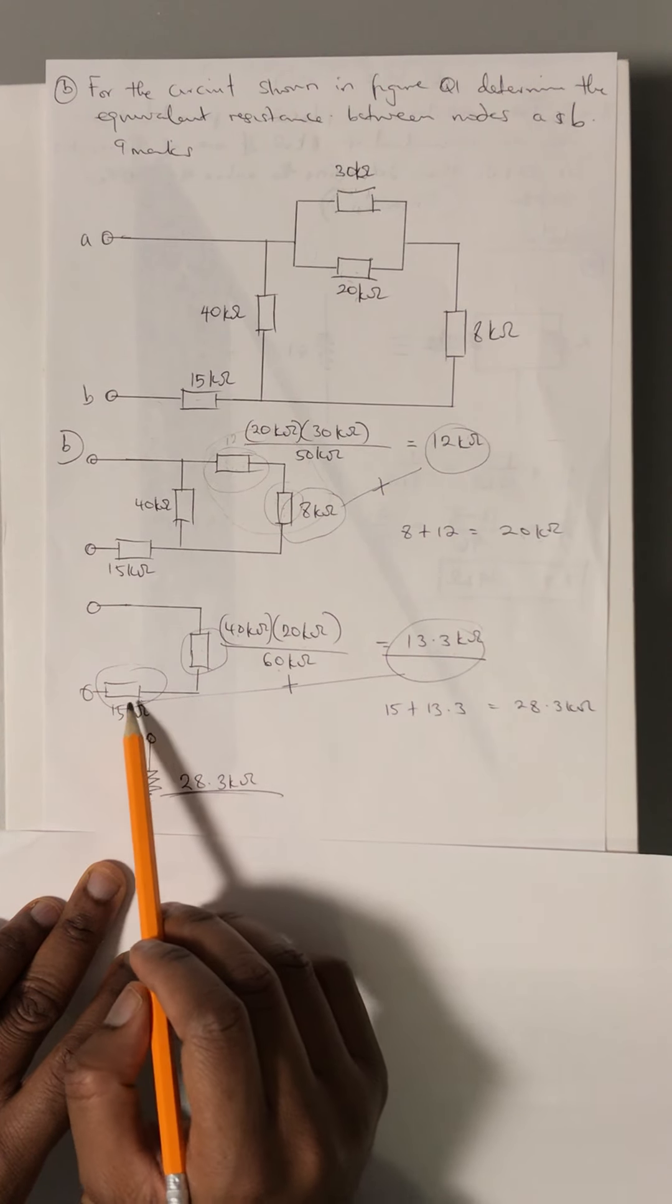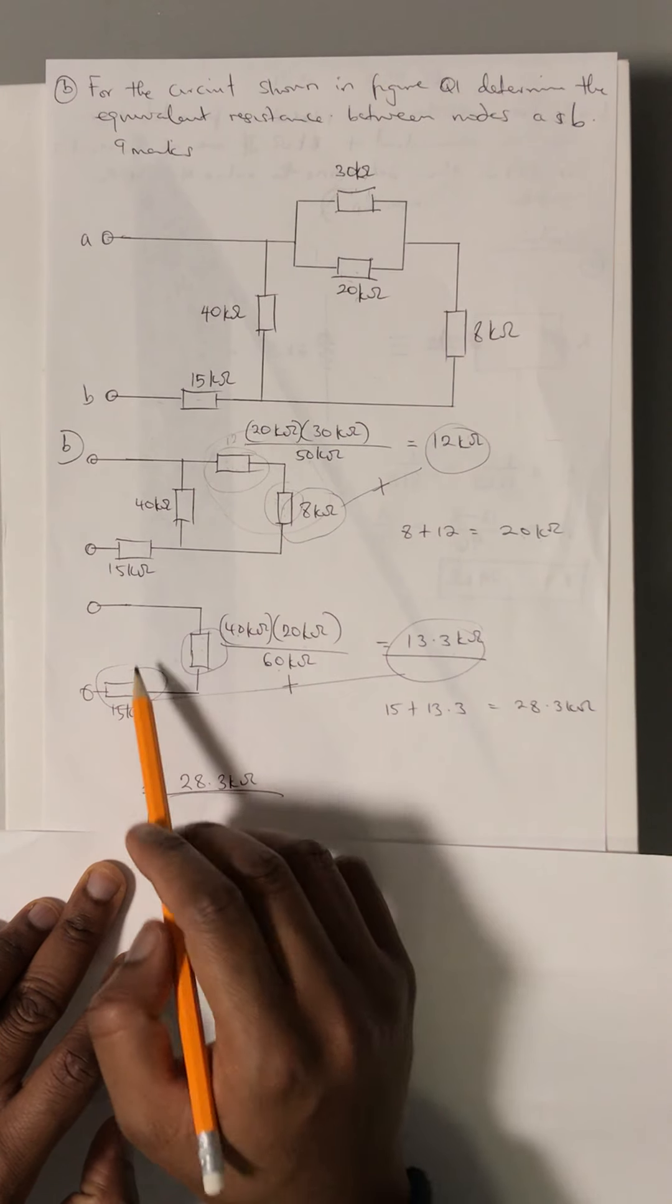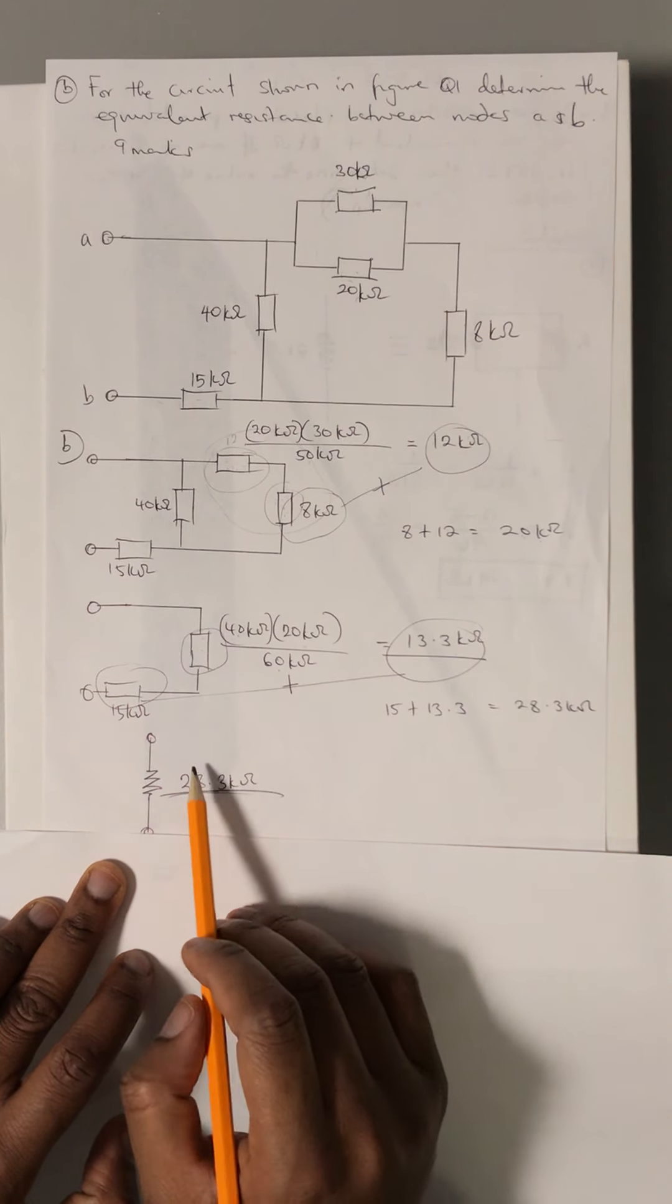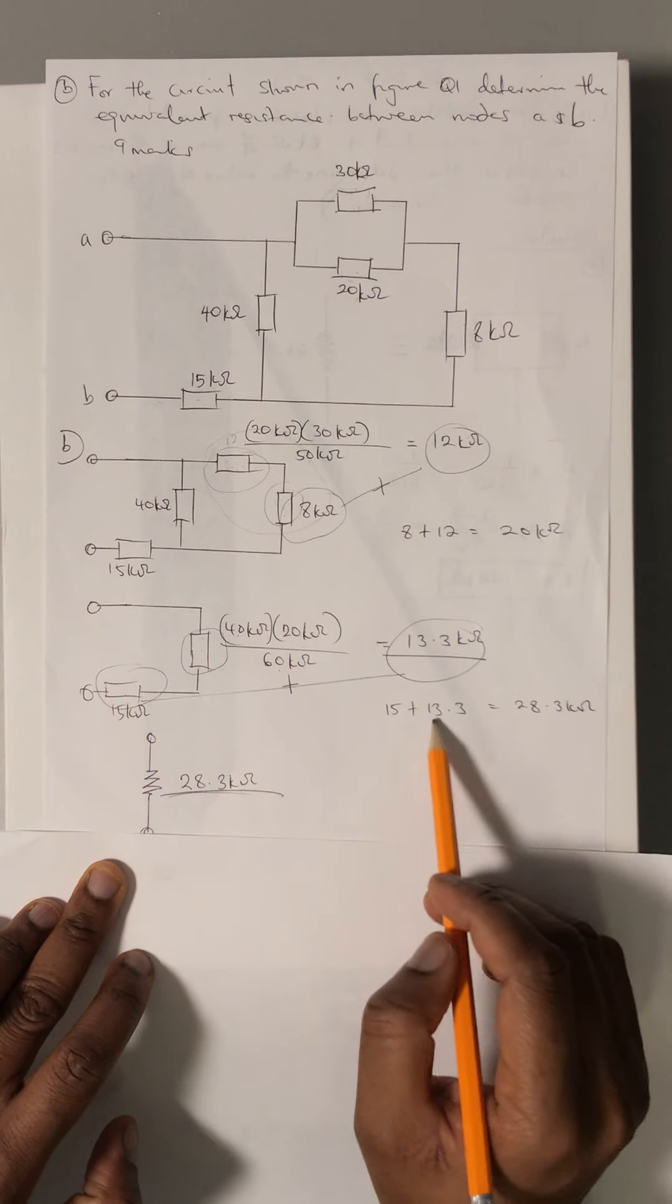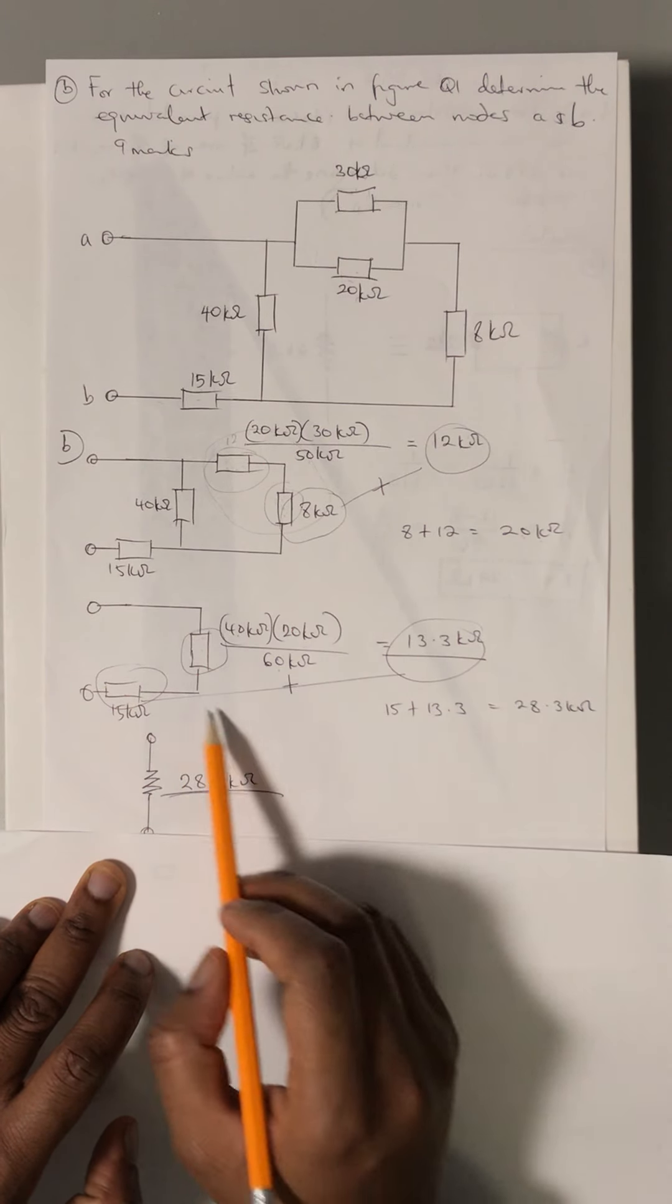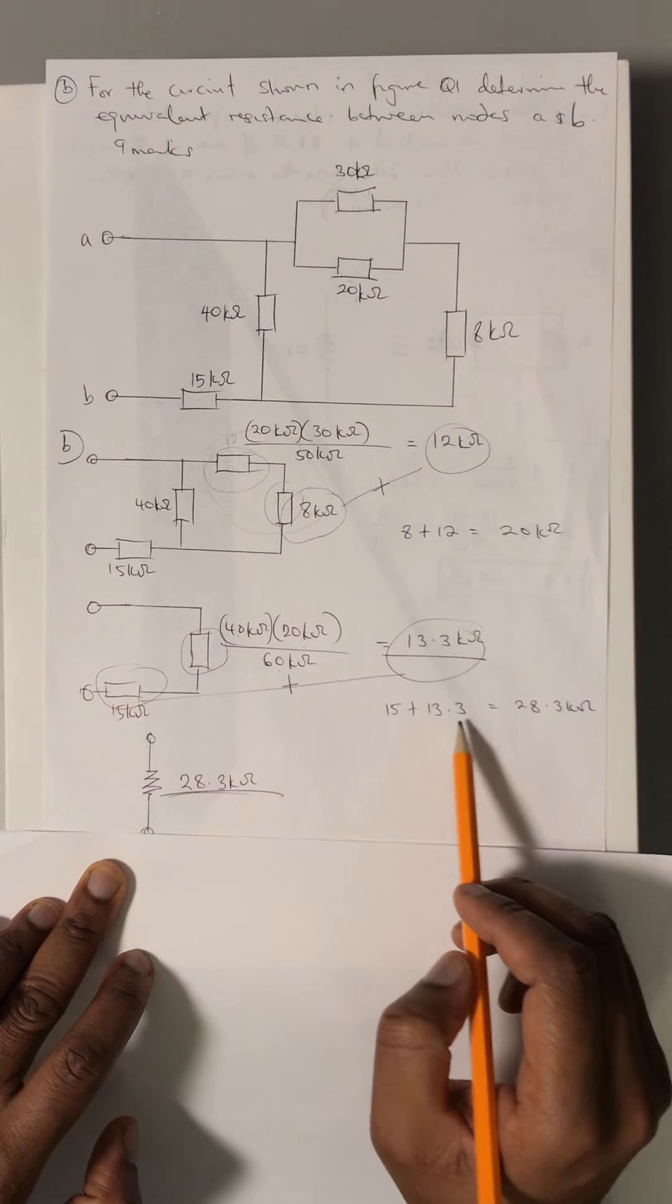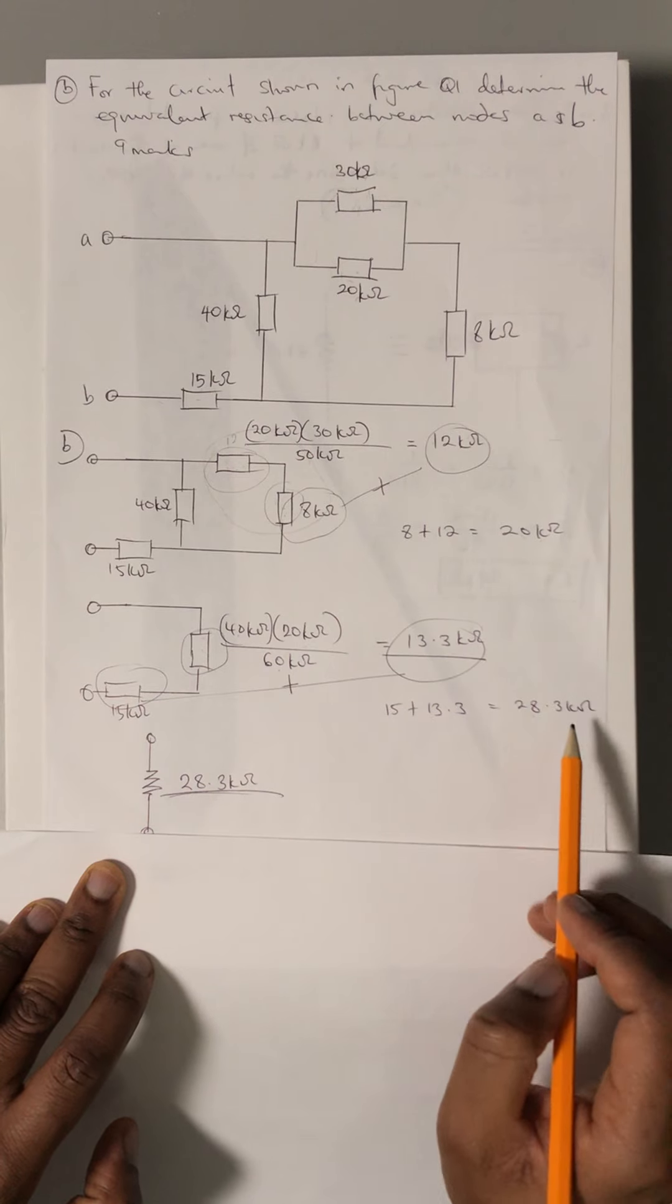Now that we have 13.3 kilo-ohms here which are connected in series with the last resistor which is 15 kilo-ohms, the next thing is to add them. We now have 15 kilo-ohms plus 13.3 kilo-ohms, which gives us 28.3 kilo-ohms.